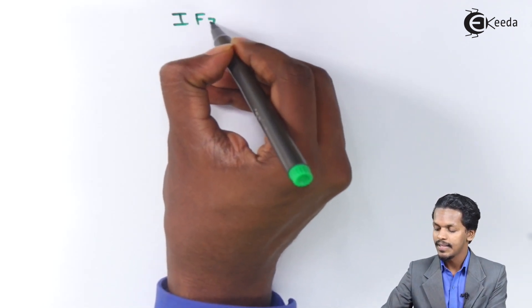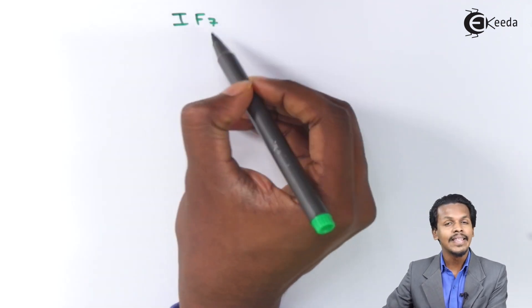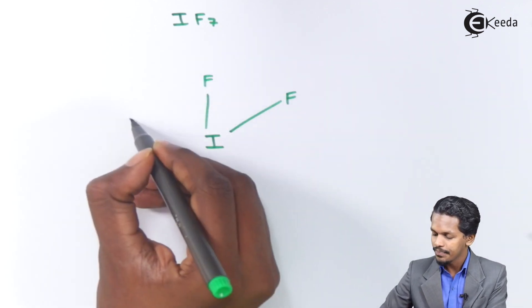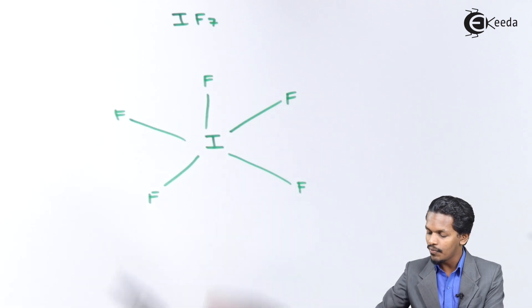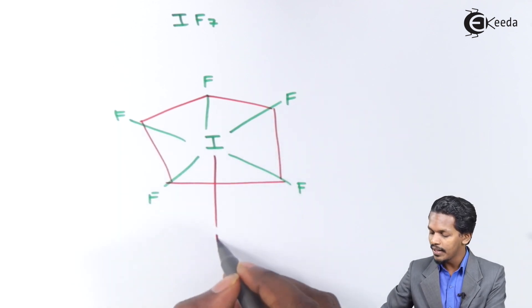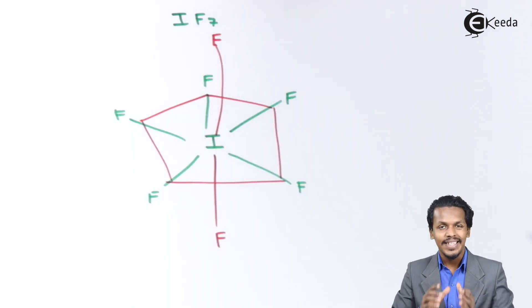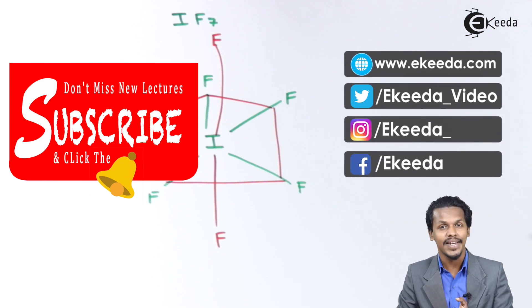Taking the example of IF₇: iodine is the central atom, and five fluorine atoms lie on the plane forming a pentagonal arrangement. The remaining two fluorine atoms are placed — one above and one below the plane. This is the structure of the interhalogen compound IF₇. Thank you for watching; I hope you understood and enjoyed this video. Don't forget to subscribe to the channel.